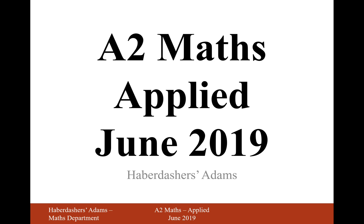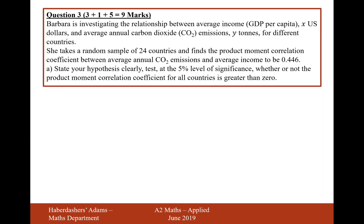Hello there, welcome to the June 2019 Applied Paper. Here we're looking at question 3. Barbara is investigating the relationship between average income, GDP per capita in X US dollars, and average annual carbon dioxide CO2 emissions in Y tonnes for different countries.